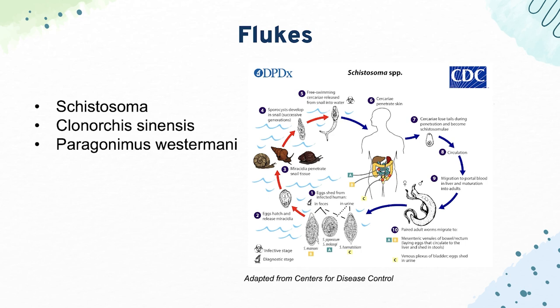Next, we have Clonorchis sinensis, which causes biliary tract inflammation and pigmented gallstones. And then we have Paragonimus westermani, which is a lung fluke.